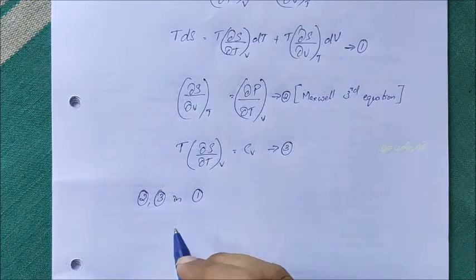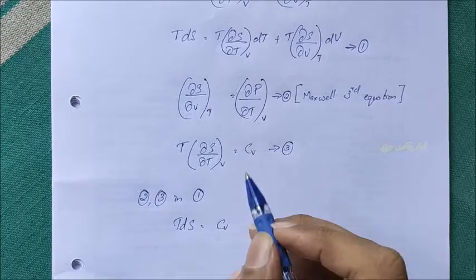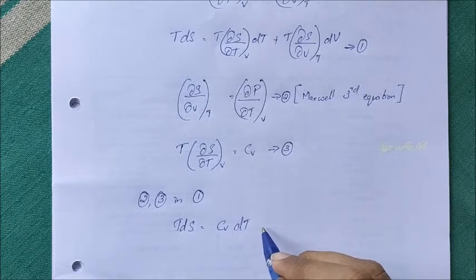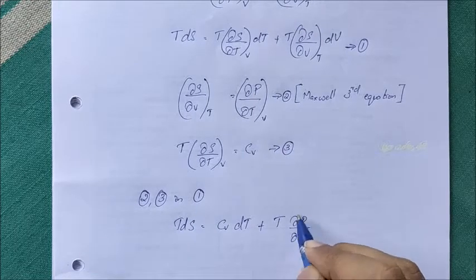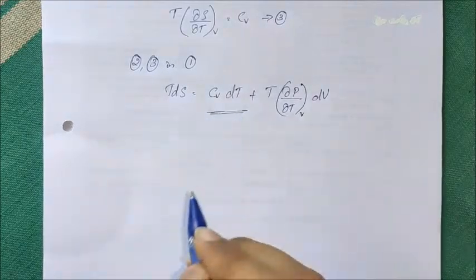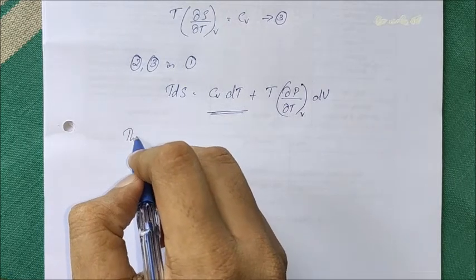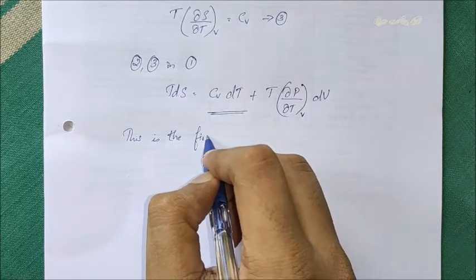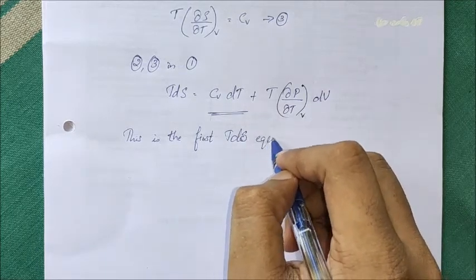Substituting Equations 2 and 3 into Equation 1, we replace (∂S/∂V)_T with (∂P/∂T)_V and T·(∂S/∂T)_V with C_V. So TdS equals C_V dT plus T·(∂P/∂T)_V dV. This expression is known as the first TDS equation.